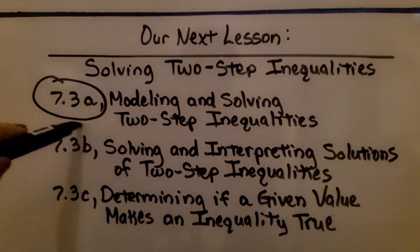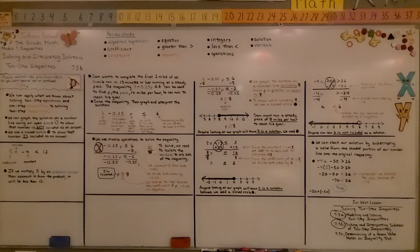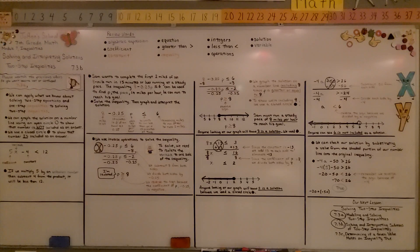We've finished this second part of the lesson. Next, we'll move on to the last part of Lesson 7.3, where we'll be determining if a given value makes an inequality true. Remember: when we have a negative coefficient, we must reverse the inequality sign, otherwise the solution won't be correct. Have a great day and join me for the last part of the lesson!